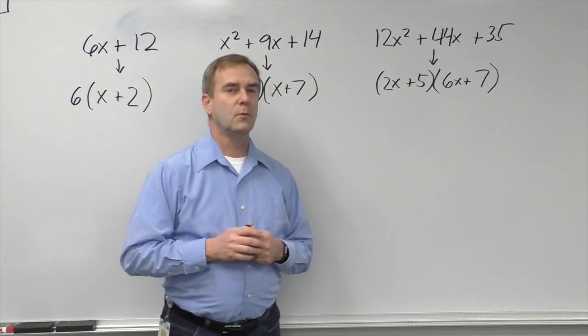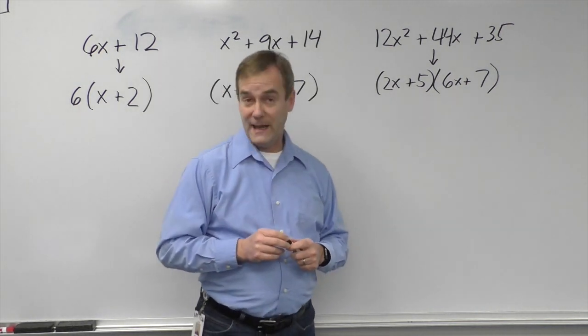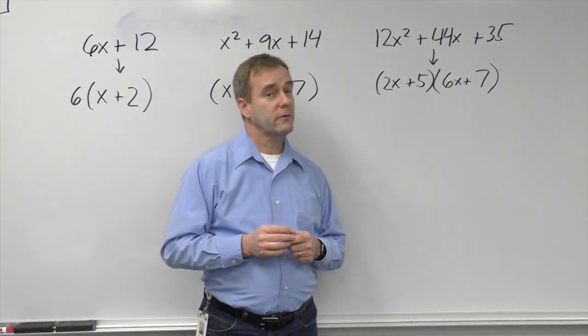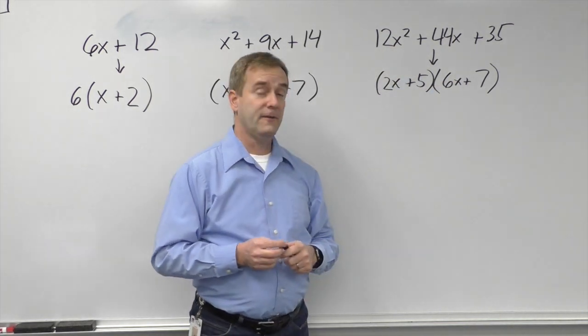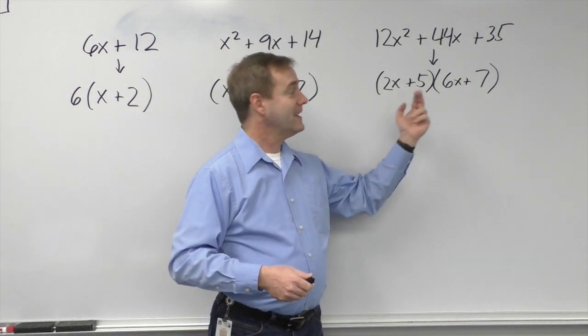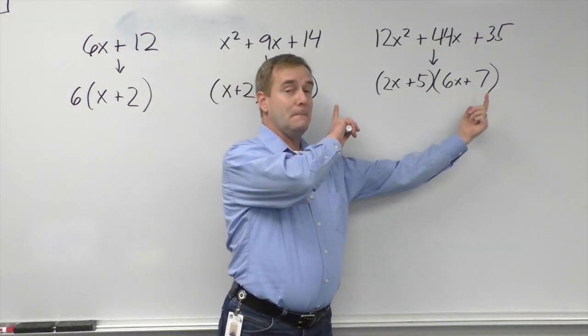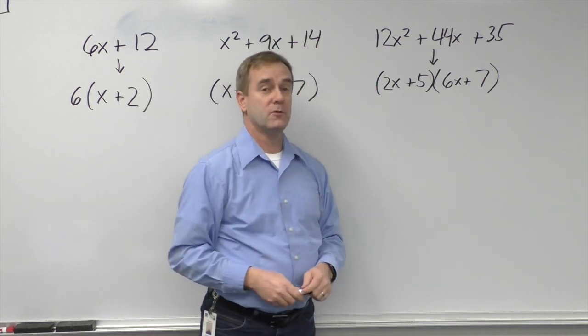Something that's bigger, a little more complicated, with a leading coefficient, if it comes apart, if it factors, we have a variety of tools. The one that I like is the star method, that takes 12x squared plus 44x plus 35 into its two pieces, 2x plus 5, 6x plus 7, multiplied back together, back to the original polynomial.